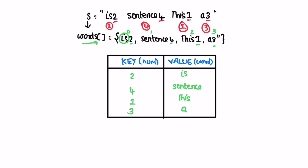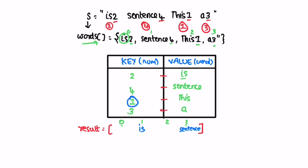Instead of building a string directly, we build a result array and then convert it to a string. We iterate through the entries inside the map using the entry set method, accessing one entry at a time. For each entry we check the key and add its value at that position inside the result array. The result array has the same length as the words array. For example, key 2 means the word 'is' goes at index 1 (key minus one). Key 4 puts 'sentence' at index 3, key 1 puts 'this' at index 0, and key 3 puts 'array' at index 2.